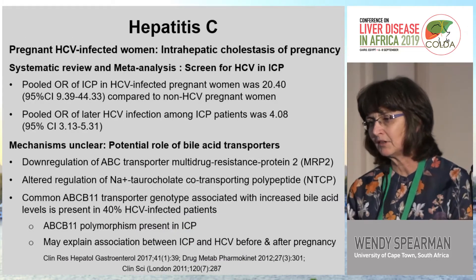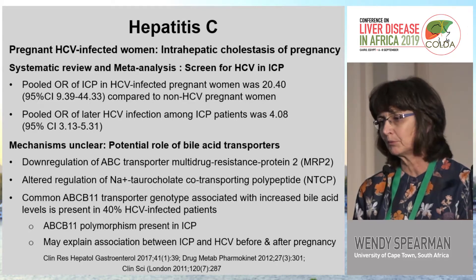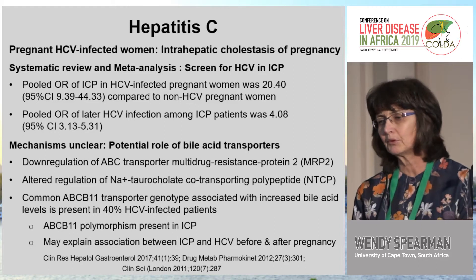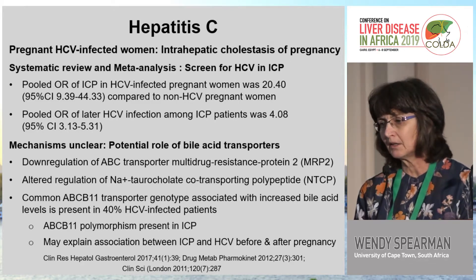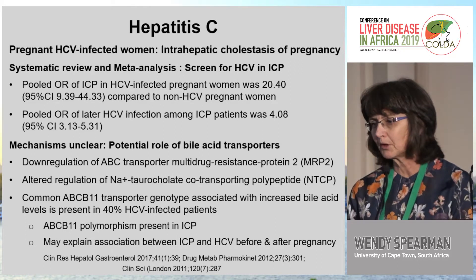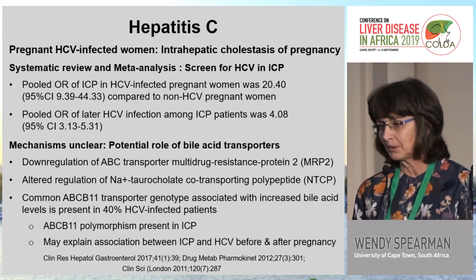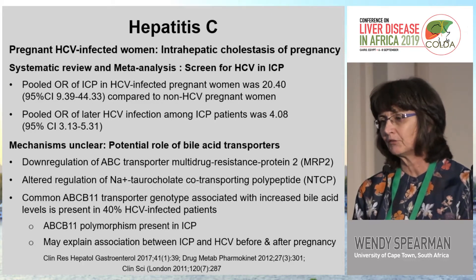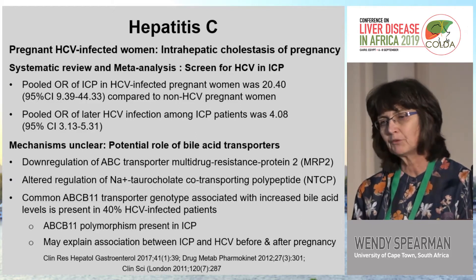An interesting entity is intrahepatic cholestasis of pregnancy and its association with hepatitis C. A systematic review screening for hepatitis C in pregnant women presenting with ICP found a pooled odds ratio for ICP if hepatitis C-infected of 20.4. The pooled odds ratio of late hepatitis C infection among ICP patients was also elevated at 4. The mechanisms are unclear but involve potential roles for bile acid transporters — downregulation of the ABC transporter multidrug-resistant protein 2, altered regulation of the sodium taurocholate co-transporting polypeptide. Most compelling is the ABCB4 transporter genotype, associated with increased bile acids, present in 40% of hepatitis C-infected patients and also in ICP, potentially explaining the association both before and after pregnancy.